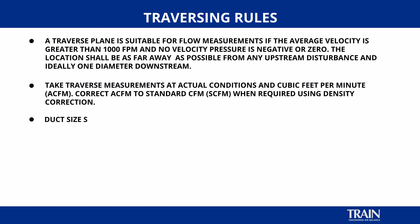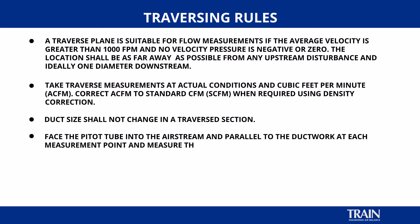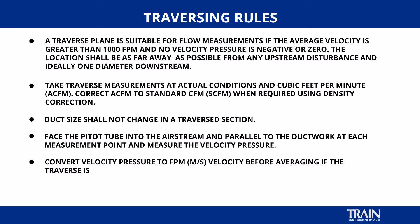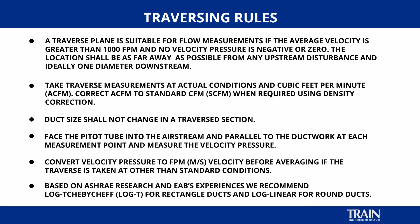When picking a location for traverses, ensure that the duct size does not change in that traverse section. Face the pitot tube into the air stream and parallel to the ductwork at each measurement point and measure the velocity pressure. Convert velocity pressure to feet per minute velocity before averaging if the traverse is taken at other than standard conditions. Based on recent ASHRAE research and our experiences, we recommend log WHF — also known as log T — for rectangular and square ducts, and the log linear method for round ducts.